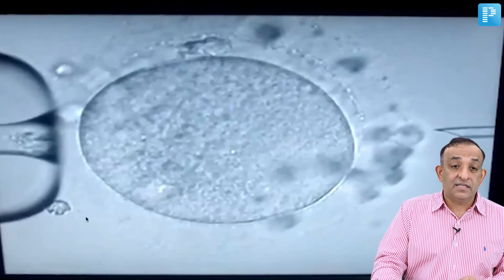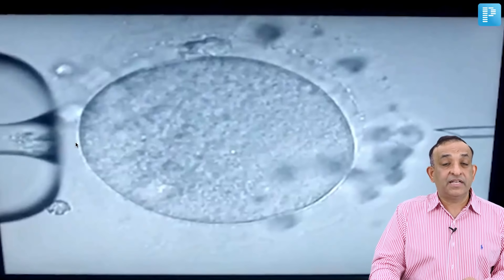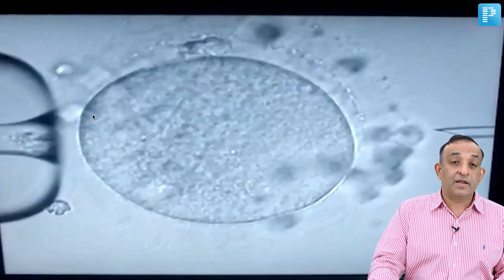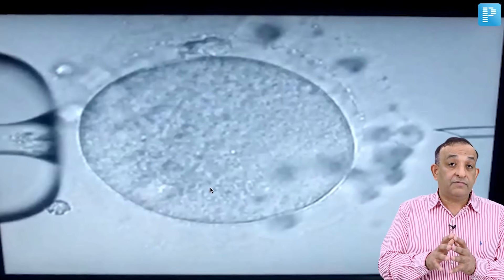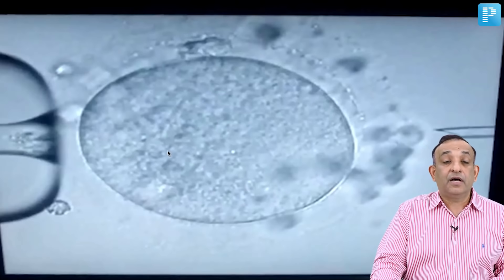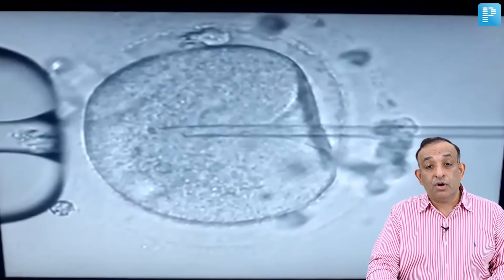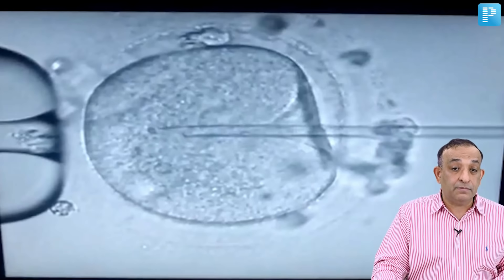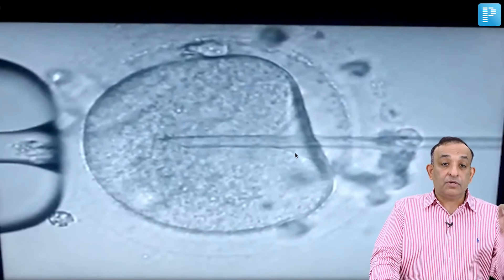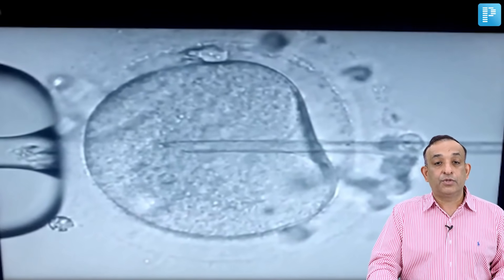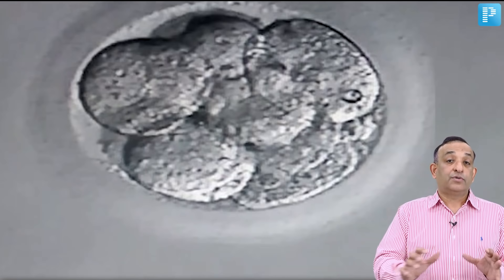The sperm is taken up into a very fine needle, which holds it until we are ready to inject it into the oocyte. The oocyte is held with a holding pipette under negative pressure, positioned so the polar body is at the 12 o'clock position — important because the mitotic spindle is at the lower part of the oocyte, and we don't want to inject near it. We inject the needle with the sperm, then aspirate the ooplasm slightly to activate the oocyte, and then release the sperm back into the ooplasm to initiate fertilization.